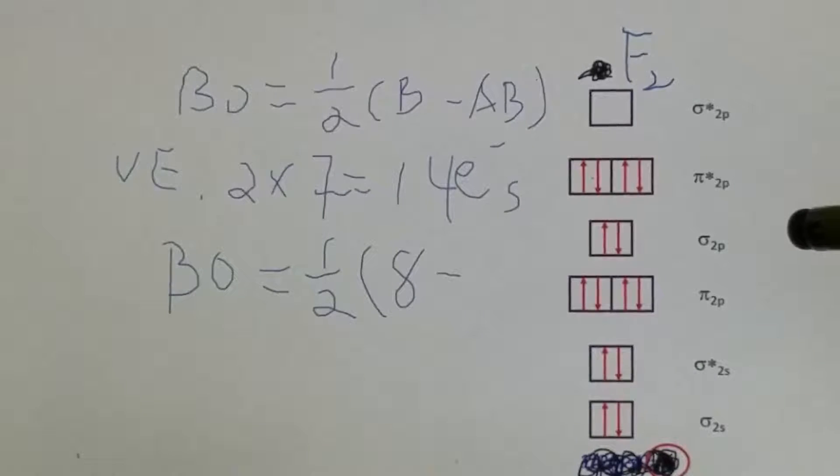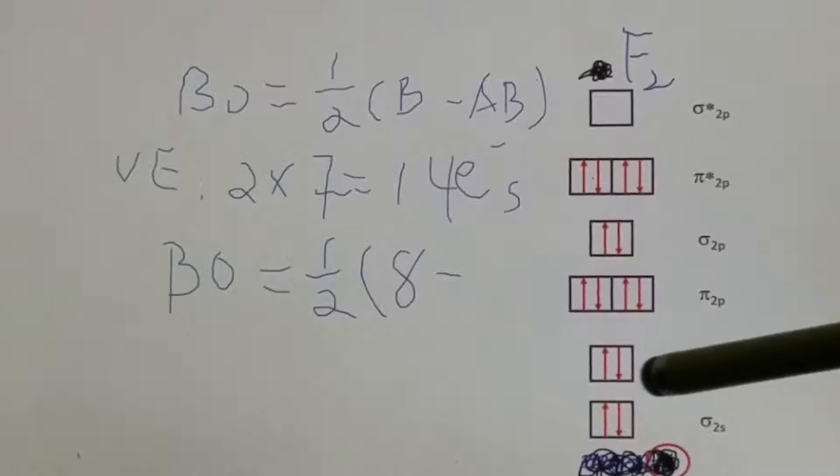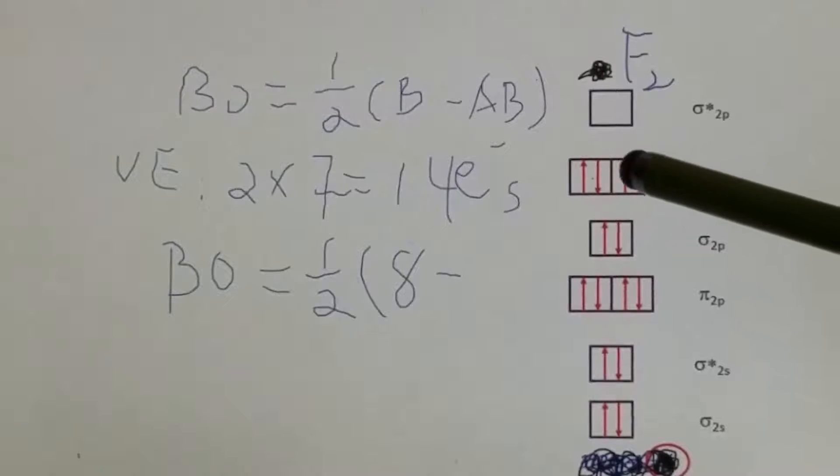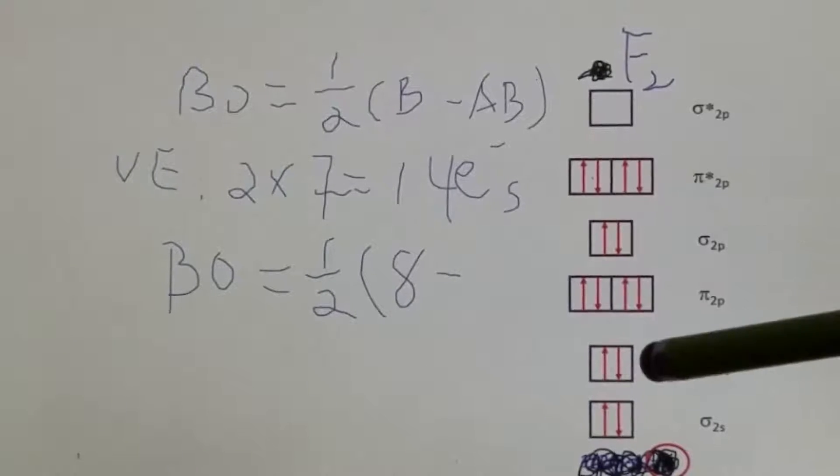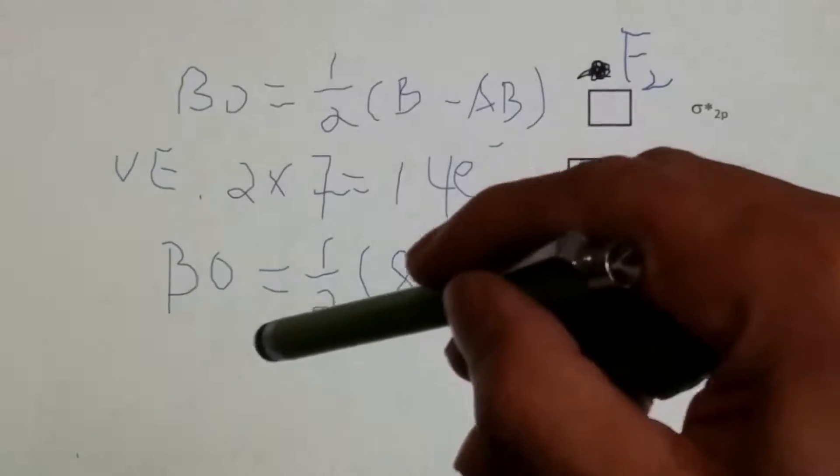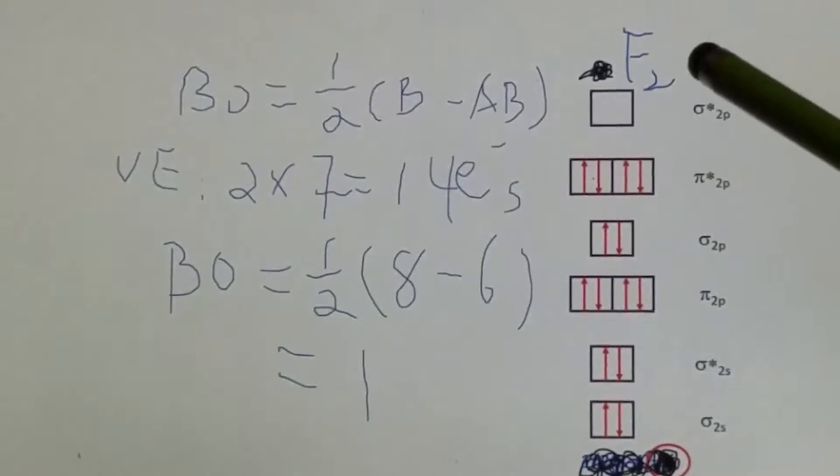8 subtracted by anti-bonding electrons: sigma star, that's 2, pi 2p star, 4, 4 plus 2 is 6. The bond order for F2 for fluorine is 1.